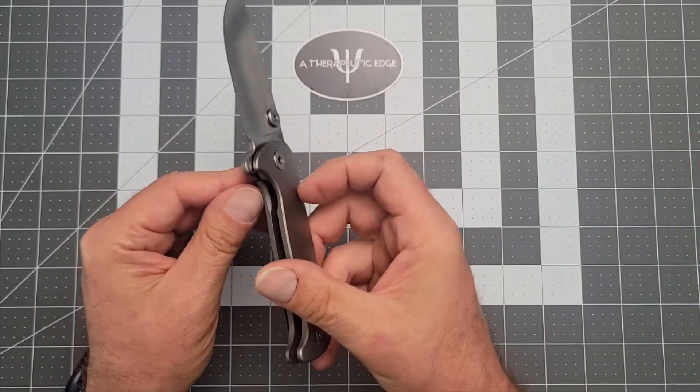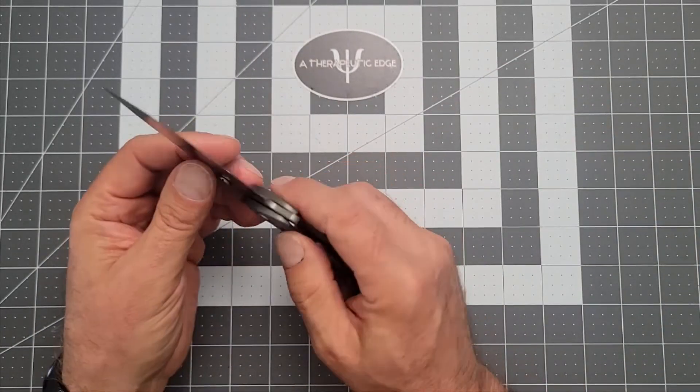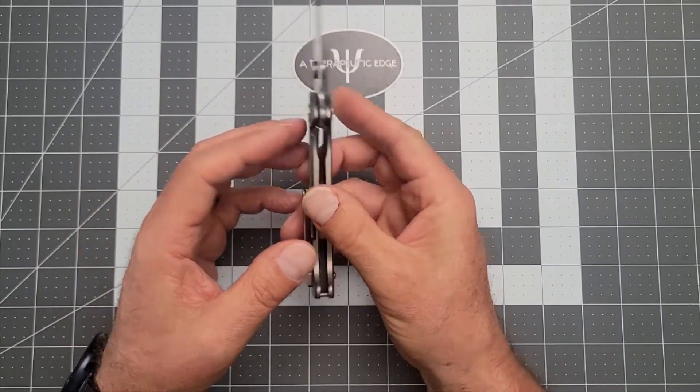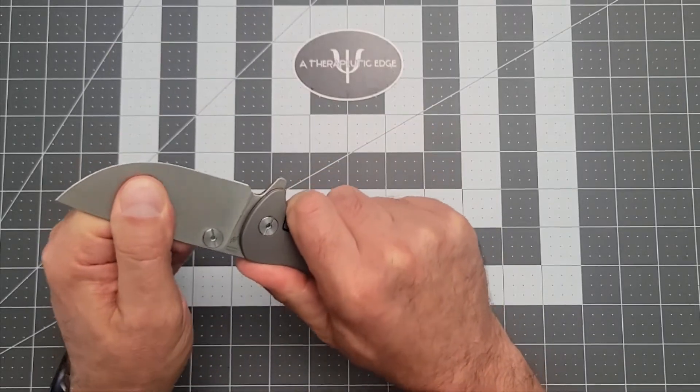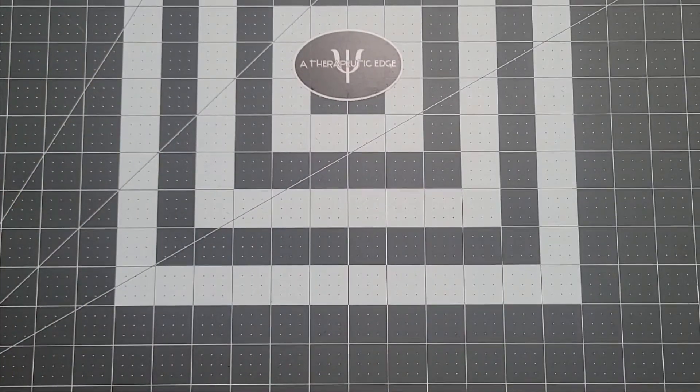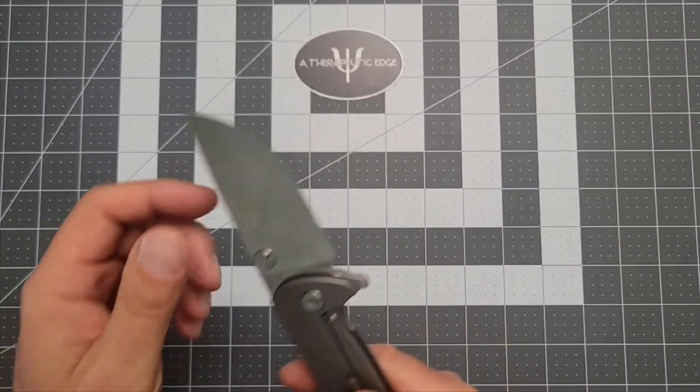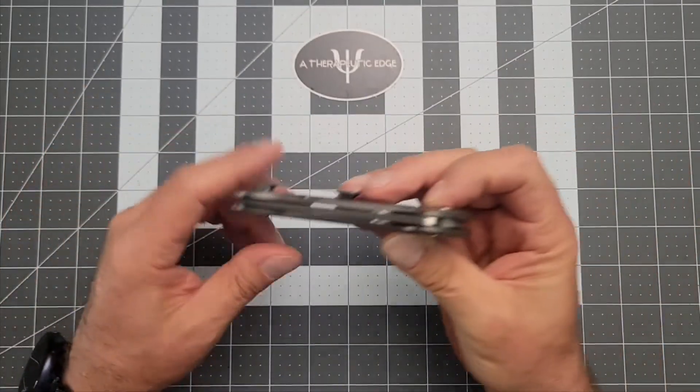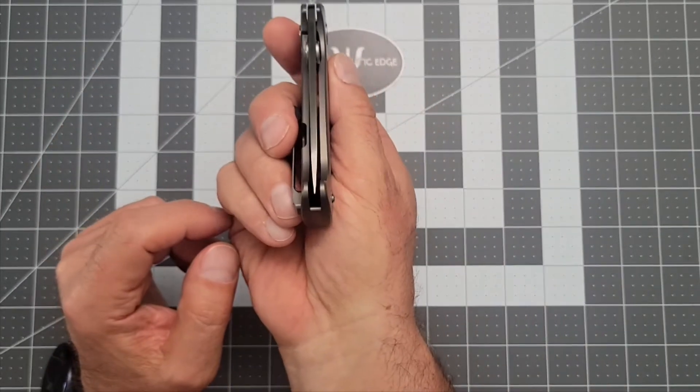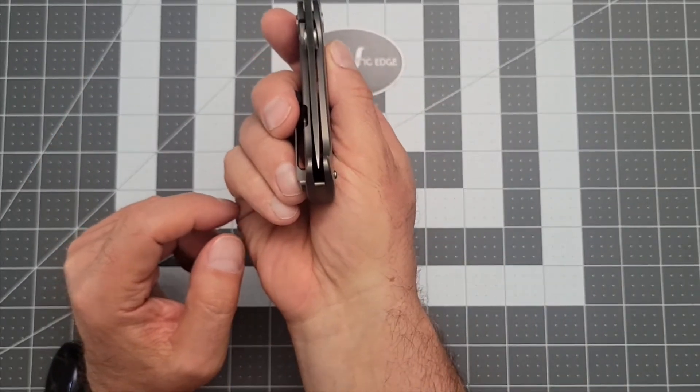There is a steel lock bar insert, but the lockup is very early on this knife. We're looking at about 20%. And yet still, it's not going anywhere. I have done all of the slappy, knocky stuff and it doesn't want to pop open. So even though it's a very early lockup, it's locked up tight. The blade came just dead centered.